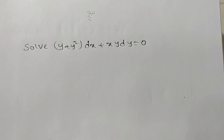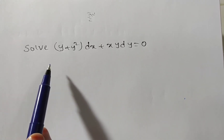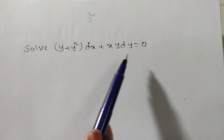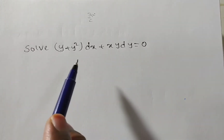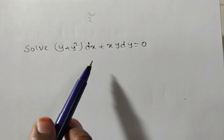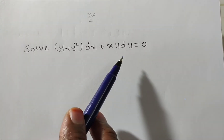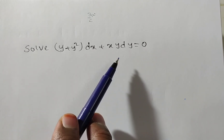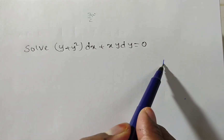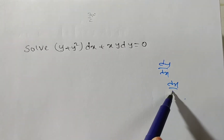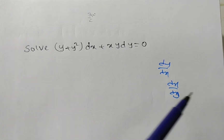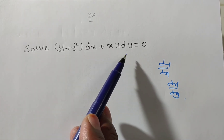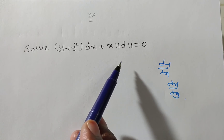Friends, the given problem is: solve (y + y²)dx + xy dy = 0. By observation, we can say this problem is a first order and first degree differential equation, because we can write it either in the form of dy/dx or dx/dy only. You can also say it is of the form M dx + N dy = 0, which is also a first order first degree differential equation.